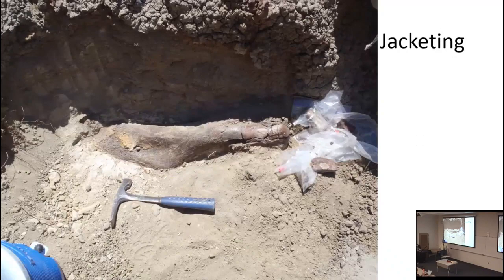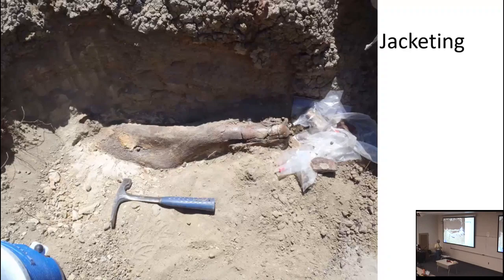Someone asked before about how you protect big fragile fossils when you get them from the field — that's the subject right here. We call it jacketing. Small specimens you can put in bubble wrap, particularly if they're small compact pieces. For larger things, it's a practice developed in the 1800s but still done largely the same today: you create a plastered jacket that surrounds the fossil.